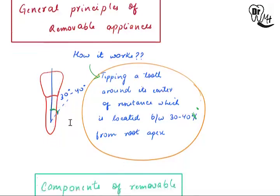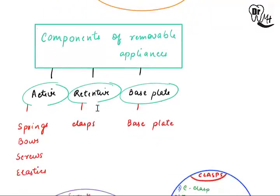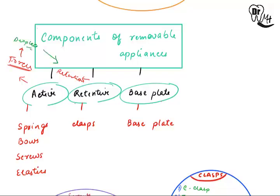Appliances have certain components — essentially parts of an appliance. These are the active components, the retentive components, and the base plate. Active components provide the forces. Retentive components provide retention for the appliance, because the active forces tend to displace the appliance and something must hold it in place. The base plate joins all the active and retentive components together and also distributes the forces.